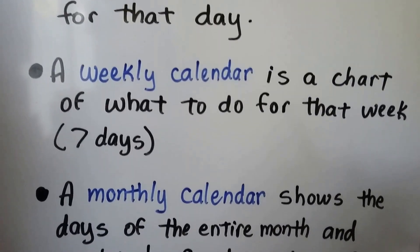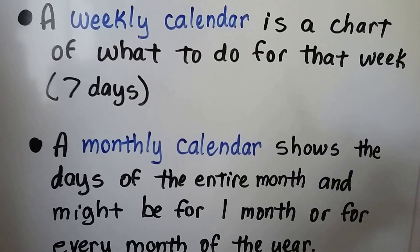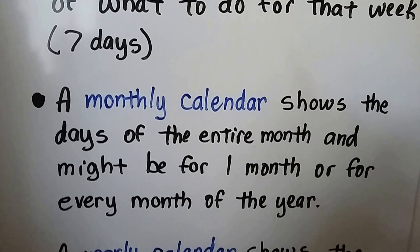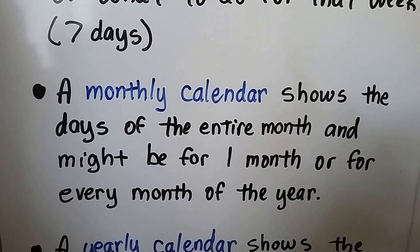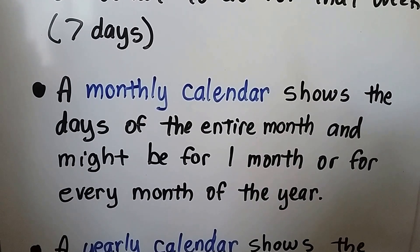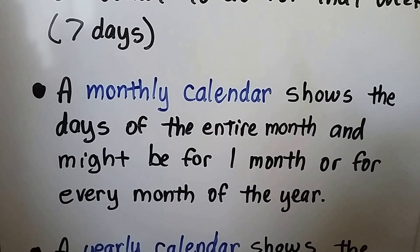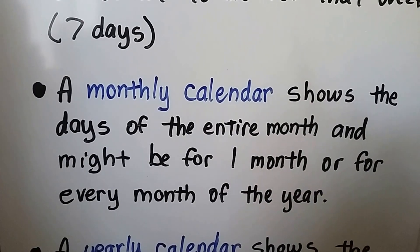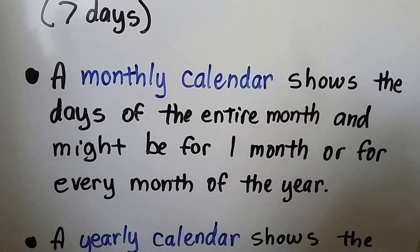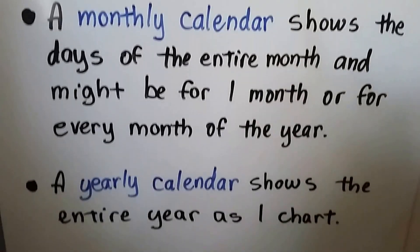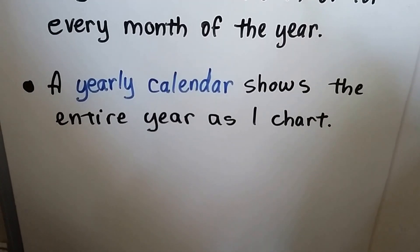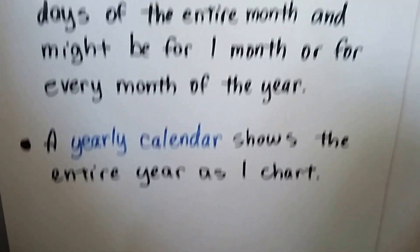A weekly calendar is a chart of what to do for that week — those seven days. A monthly calendar shows the days of the entire month and might be for one month, or it could be every month of the year stapled together with some pretty pictures. A yearly calendar shows the entire year as one chart.